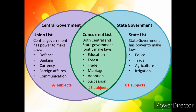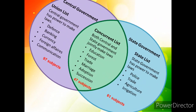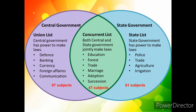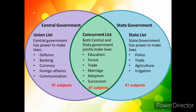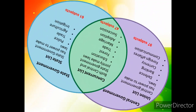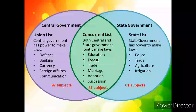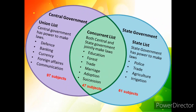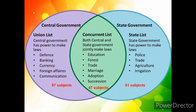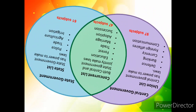The Indian constitution provides a division of powers in the federal structure between the union and state government in the seventh schedule. There are three lists: the union list, the state list, and the concurrent list. There are 97 subjects in the union list on which parliament has exclusive powers to legislate — including defence, citizenship, and foreign affairs. There are 61 subjects in the state list such as police and fisheries, and 47 in the concurrent list such as education and marriage and divorce. Besides this, there are residuary subjects belonging to the union such as computer software and e-commerce.